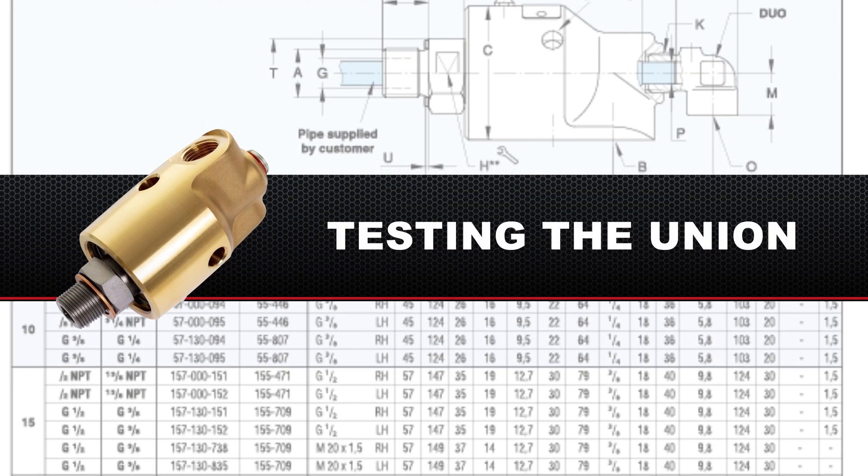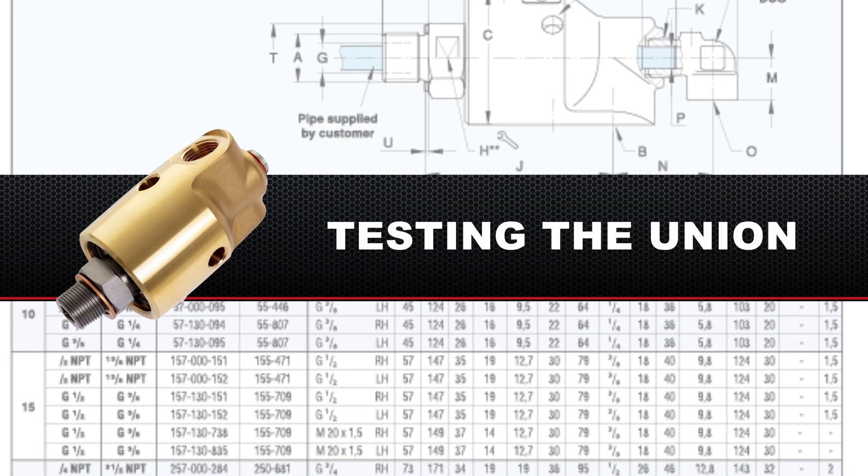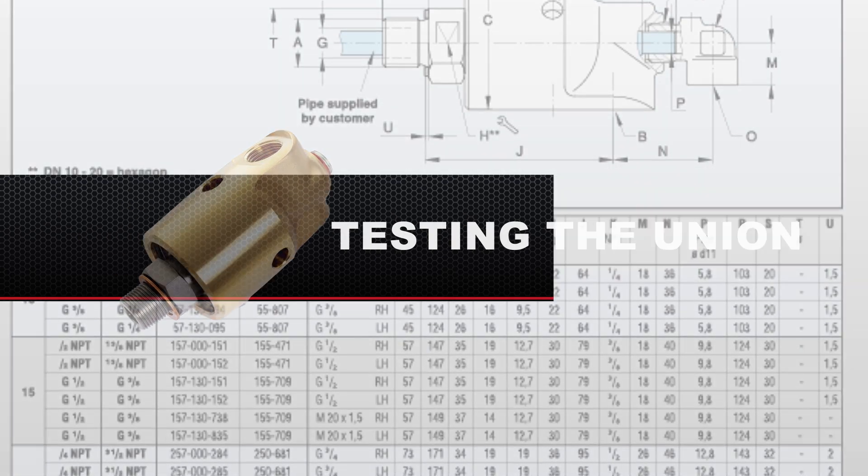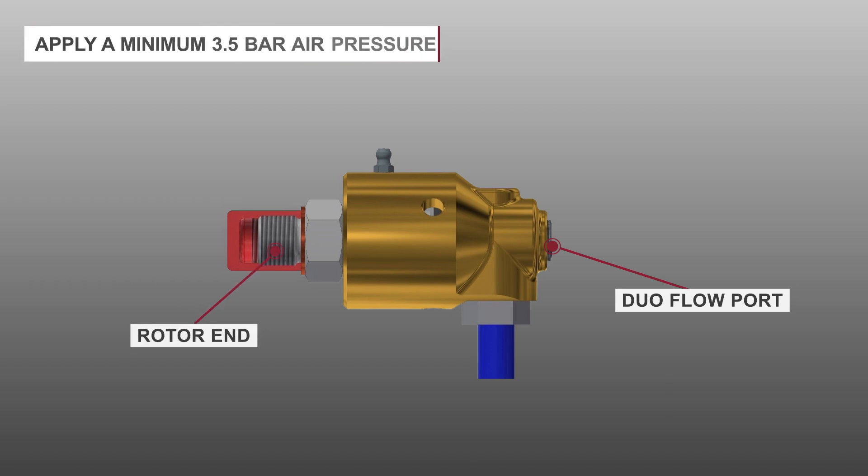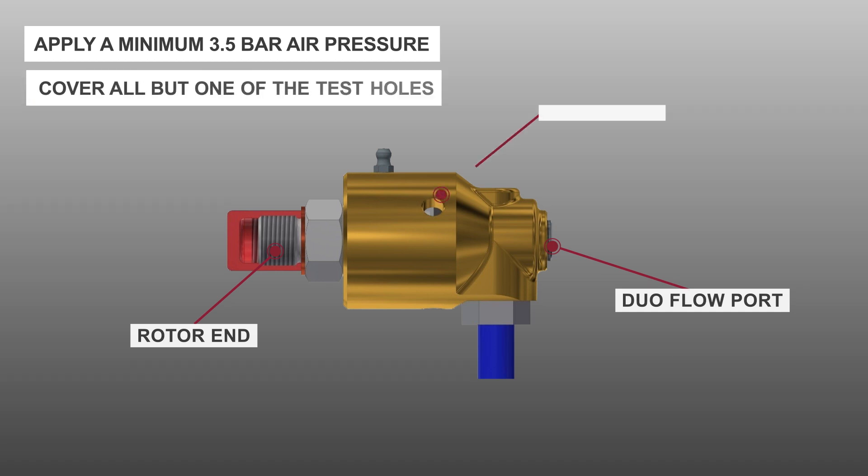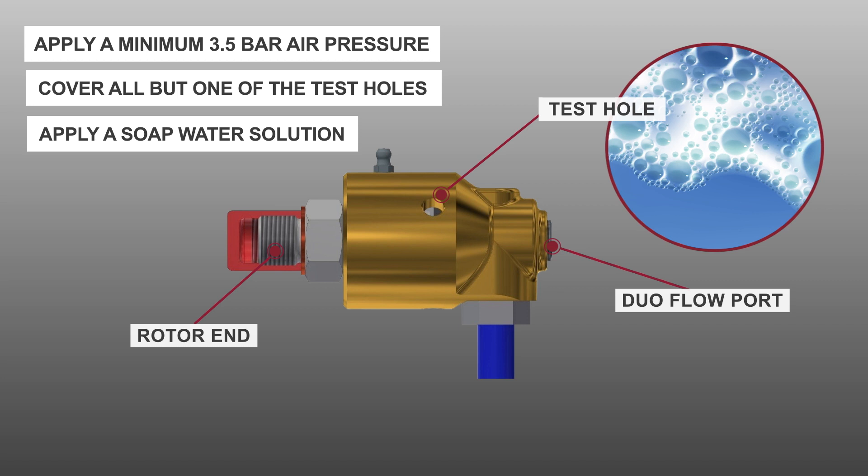The final step is to test the reassembled union before installation on the machine. Ensure that the DuoFlow port is plugged and the rotor end is capped. Apply a minimum 3.5 bar air pressure. Cover all but one of the test holes and apply a soap water solution or bubble soap over the open test hole.